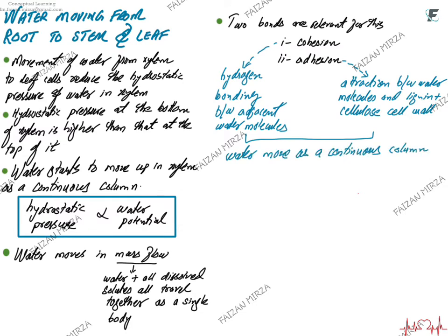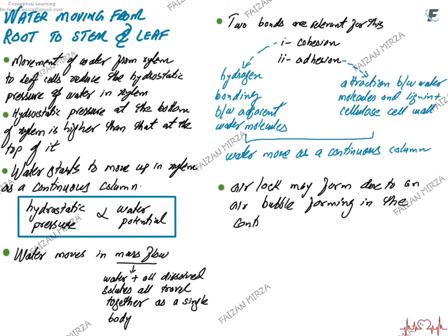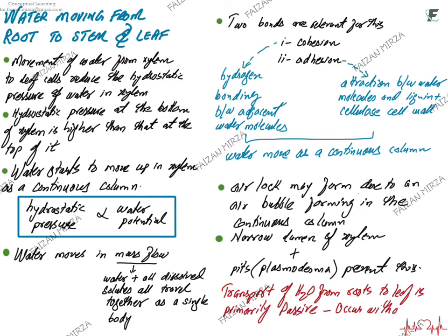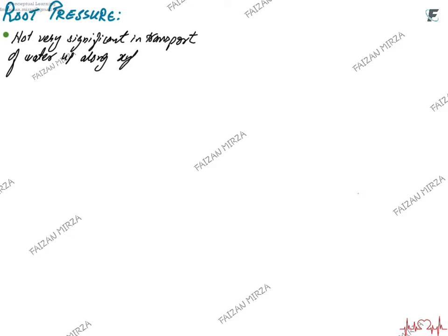Water moves as a continuous column up the xylem. An airlock may form if an air bubble enters. When an airlock forms, that xylem vessel cannot transport water upward anymore. However, water can go out to the surrounding xylem through the pits and plasmodesmata, while the air bubble stays trapped. Transport of water from roots to leaf is primarily passive, occurring without ATP and even in dead plants. Since xylem has a narrow lumen, airlocks rarely form, and if they do, the plant resolves it by keeping the bubble contained and allowing water to exit through the unlignified parts.